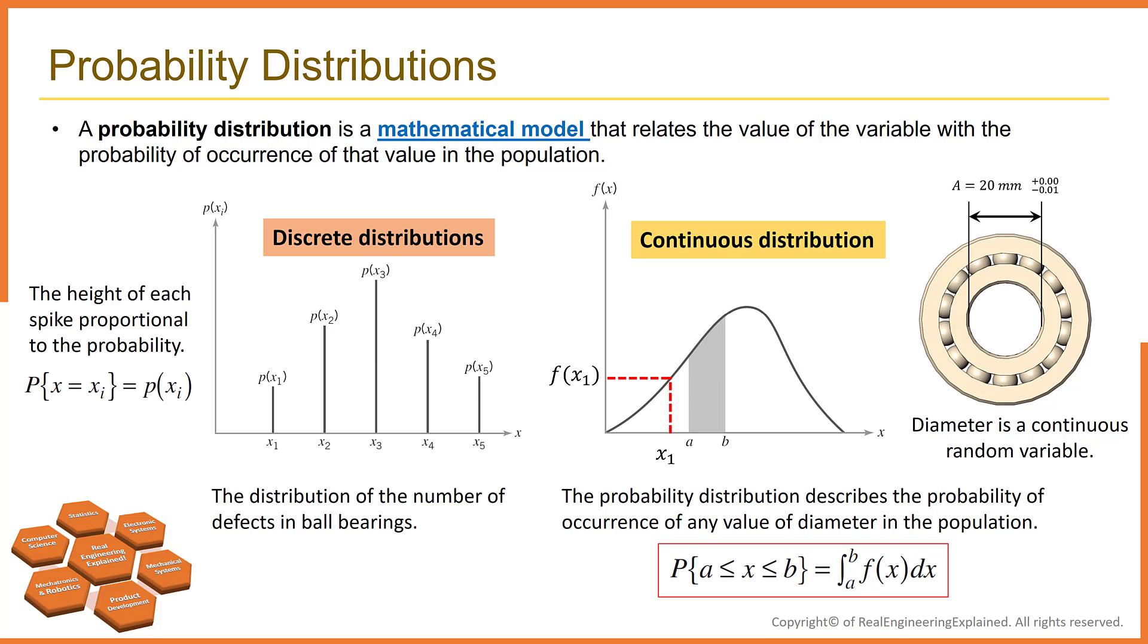The probability distribution describes the probability of occurrence of any value of diameter in the population. For example, diameter between A and B in the whole population. There are two types of probability distributions: continuous distributions and discrete distributions. When the variable being measured is expressed on a continuous scale, like height or weight, it could take on any number. Its probability distribution is called a continuous distribution. In this case, the probability distribution of ball bearing diameter is continuous, because it could take any number. For example, 20.12 millimeter.